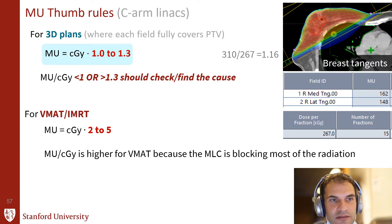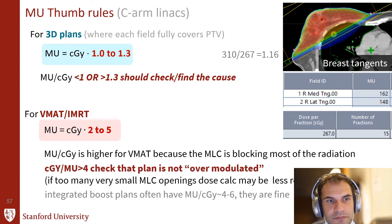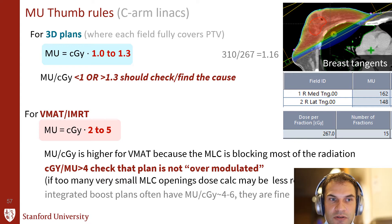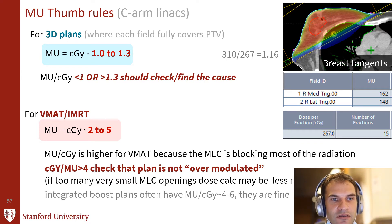For VMAT, the thumb rule is a bit less useful because MUs can typically be much higher than the dose per fraction. That's because the MLCs are blocking most of the radiation most of the time. We do like to keep it reasonably low. In general, a very high ratio of MU per centigray typically indicates that the MLCs are opening many small openings, and the dose delivered through small openings can be a little less reliable.